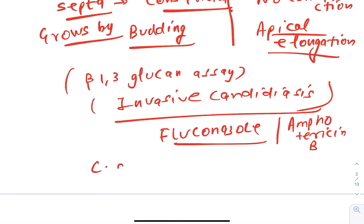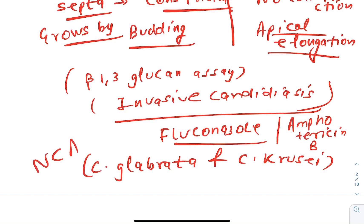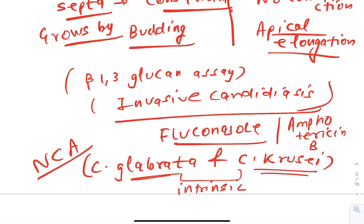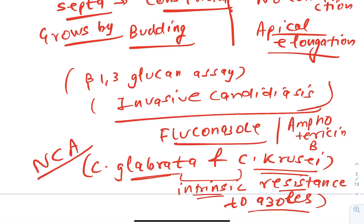Two important NCA to remember are Candida glabrata and Candida krusei — you may recognize them from the NCA list. Both have intrinsic resistance to azoles. This was a previous JIPMER question and is likely to come again. Multi-drug resistance in NCA is increasing day by day, which is a major clinical concern.